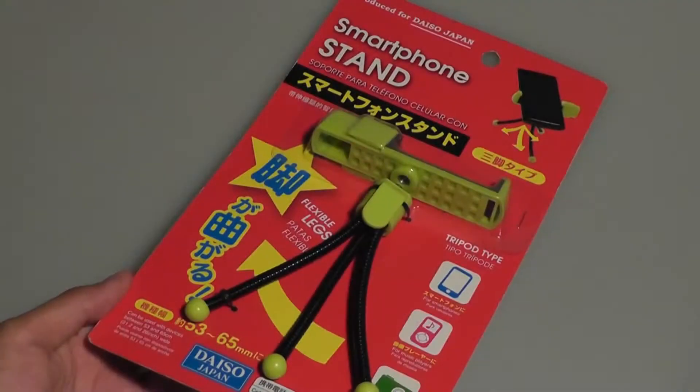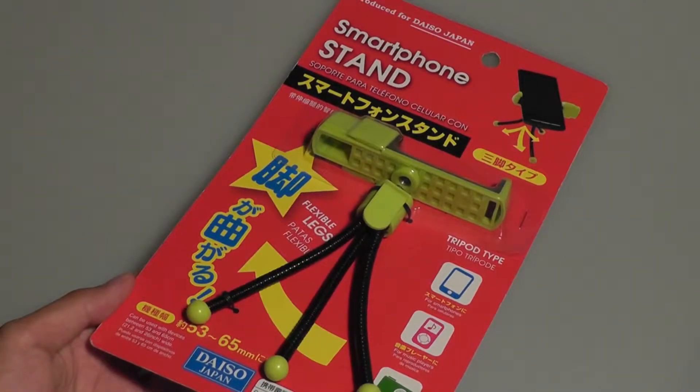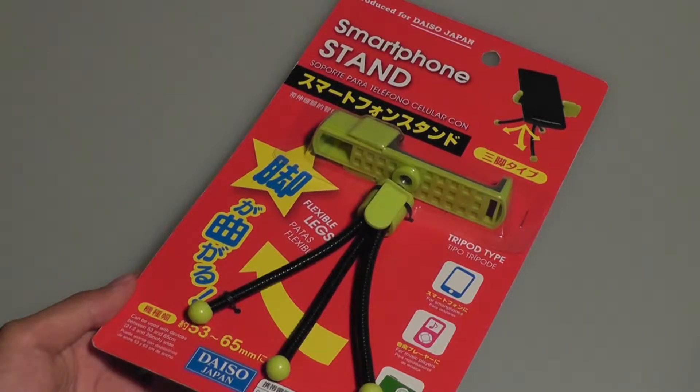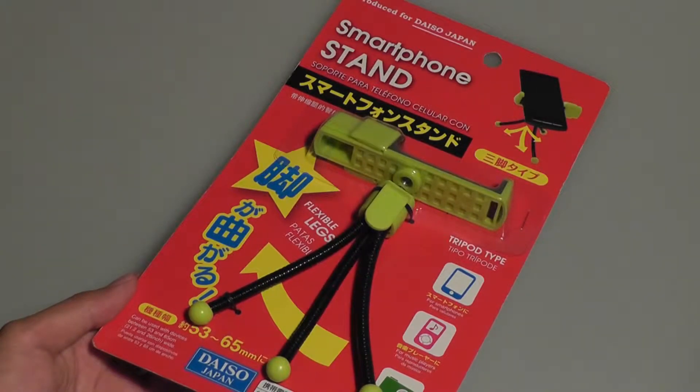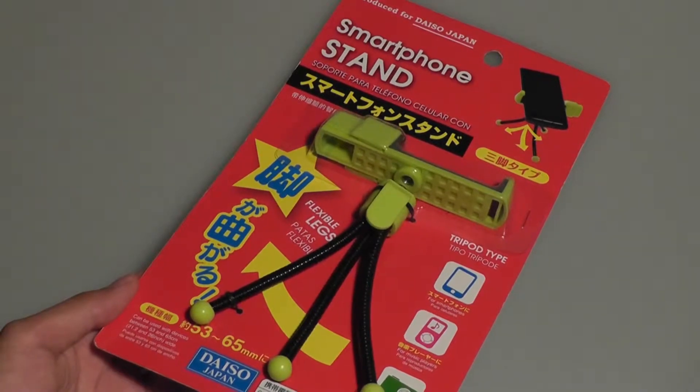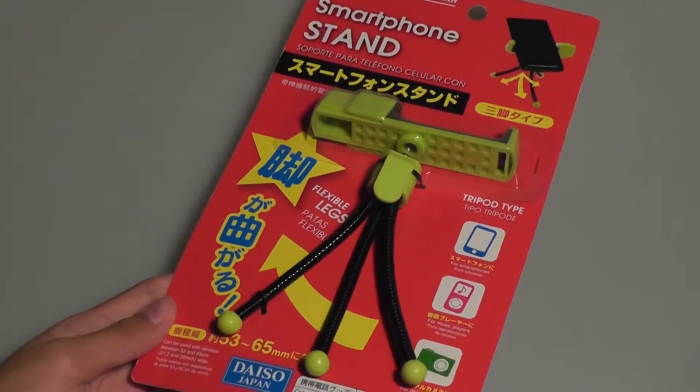Hey folks, here at OSReviews you're watching our video review of the smartphone universal stand by Daiso Japan. Daiso is the equivalent of the American dollar store except everything is $1.50, so it's 50% more expensive but still very affordable.